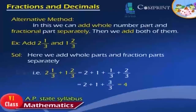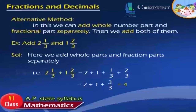Alternative Method. In this method, we can add the whole number part and fractional part separately, then add both of them. Example: add 2 and 1 by 3, and 1 and 2 by 3. Solution: we add whole parts and fractional parts separately. That is, 2 plus 1 plus 1 by 3 plus 2 by 3 equals 2 plus 1 plus 3 by 3, which is equal to 4.